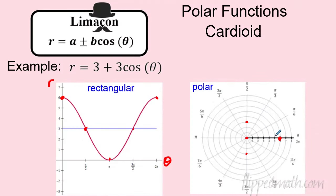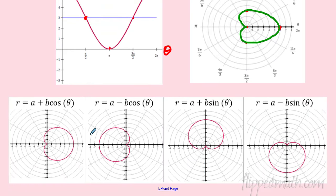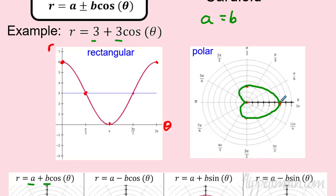The cardioid looks like a heart. This happens when a equals b. Because it's cosine, it opens to the right. Positive cosine opens right, negative cosine opens left, positive sine opens up, negative sine opens down — assuming a and b are positive numbers. The max distance is a + b = 6 in this case.